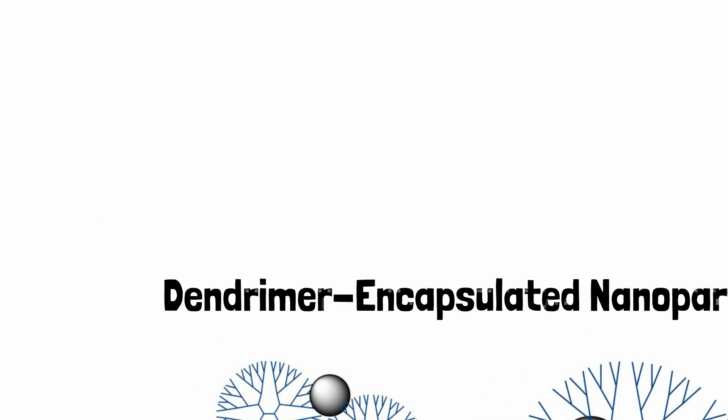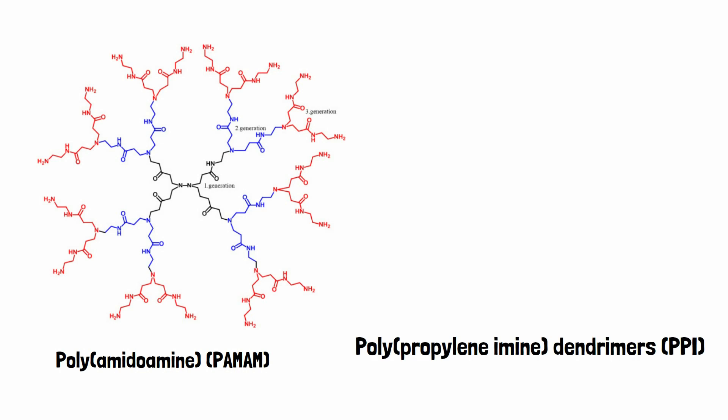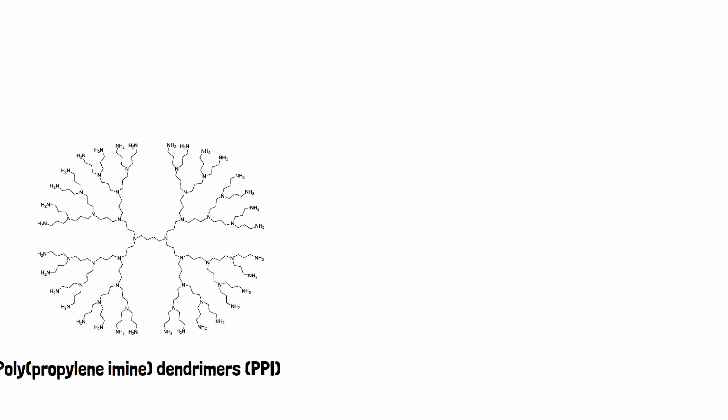What are dendrimers? The poly-amidoamine (PAMAM) and poly-propylene amine are the two most popular and commercially viable dendrimers available to date.